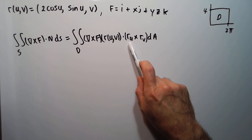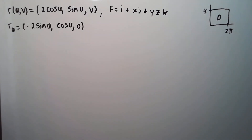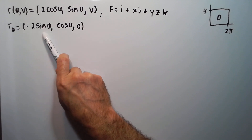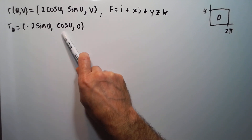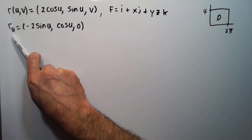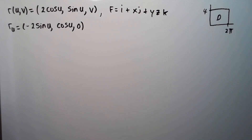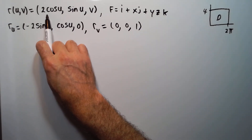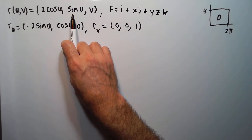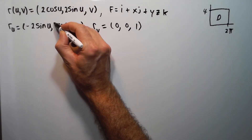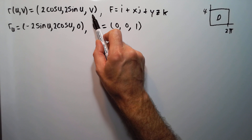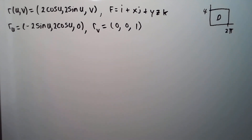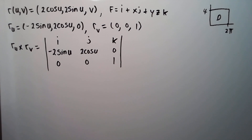Let's find r_u first. The derivative with respect to u: looking at the first component, derivative of cosine would be minus sine, so we get minus 2 sine u. Derivative of sine u would be 2 cosine u. And derivative of v with respect to u would be 0. So r_u is (−2 sin u, 2 cos u, 0). Now for r_v: the first component has no v, so it's 0. The second component has no v, so it's 0. And derivative of v is 1. So r_v is (0, 0, 1). Now let's do the cross product r_u cross r_v.